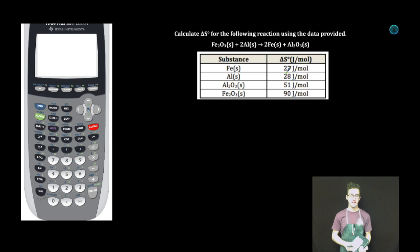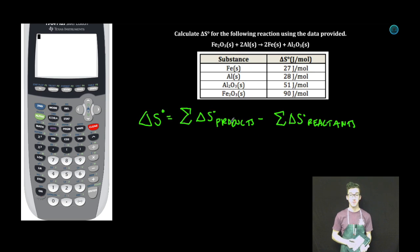Anytime I'm provided the entropy change for a set of substances, I'm automatically thinking of the following equation. Sum of the entropies of the products minus sum of the entropies of the reactants.